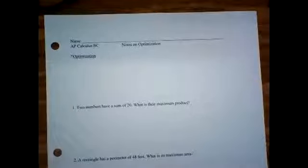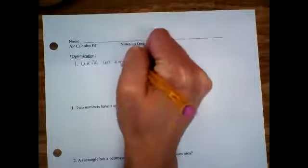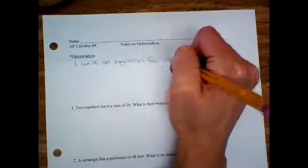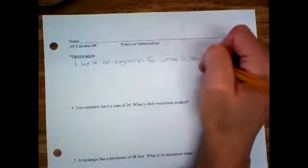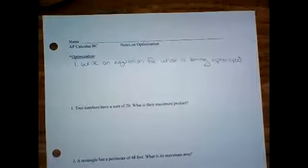All right, so for optimization, that means that you're maximizing or minimizing something. So your first step is you're going to write an equation for what is being optimized. For example, if it says what is the maximum area, you need to write an equation for area. If they say what is the minimum cost, you need to write an equation for cost. So whatever it is they tell you to maximize or minimize, you need to write an equation for that.